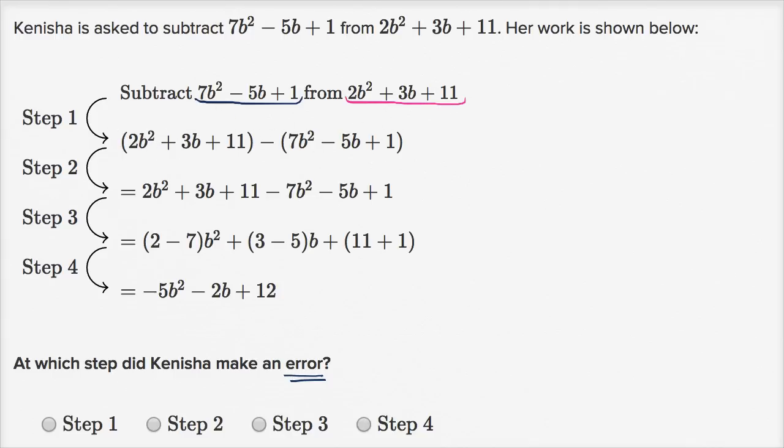She is indeed subtracting 7b squared minus 5b plus one from 2b squared plus 3b plus 11. That's fair. All right, so step one seems to be okay.